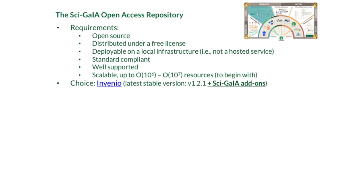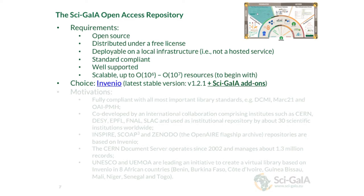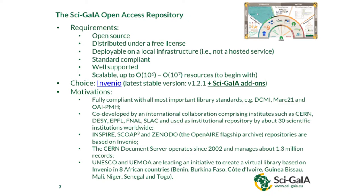The choice was Invenio — the latest stable version plus a series of add-ons. The motivations were manifold. It is fully compliant with the most important library standards: Dublin Core, MARC21, and OAI-PMH. It is developed at CERN, co-developed with many other laboratories worldwide. Very important repositories like Inspire for high energy physics, Scoap3 for published high energy physics papers, and Zenodo — the flagship archive of OpenAIRE — are based on Invenio. Concerning scalability, the CERN document server has operated for almost 15 years and currently manages more than 1.3 million documents — exactly the scale we wanted.